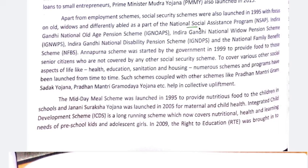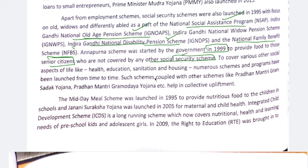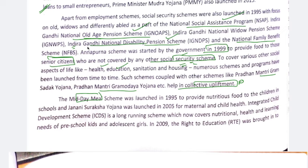Apart from employment schemes, there were also social security schemes, including the National Social Assistance Program (NSAP), Old Age Pension schemes, National Disability Pension Scheme under Indira Gandhi, National Family Benefit Scheme, and the Annapurna Scheme started in 1999 to provide food to senior citizens not covered under Social Security Schemes. There were also housing schemes, the Midday Meal Scheme, Pradhan Mantri Gram Sadak Yojana, Pradhan Mantri Gram Udyog Yojana, and schemes covering health, education, sanitation, and housing.